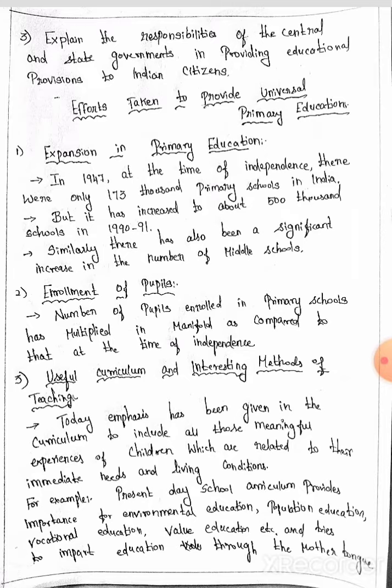First, the expansion in primary education. In 1947, at the time of independence, there were only 173,000 primary schools in India. But this increased to about 500,000 schools in 1990 to 1991.